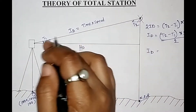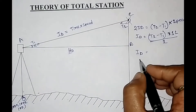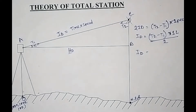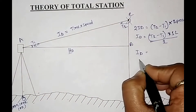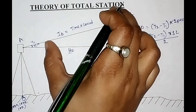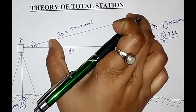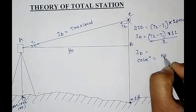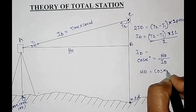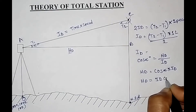A triangle is formed here — I am naming the vertices A, B, and C. So to find out HD with respect to alpha angle: cos(α) = HD / ID, that is base by hypotenuse. So HD is equal to cos(α) × ID. In this manner we get the horizontal distance with the help of inclined distance and vertical angle.